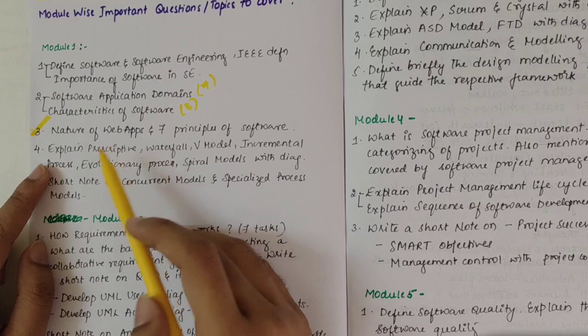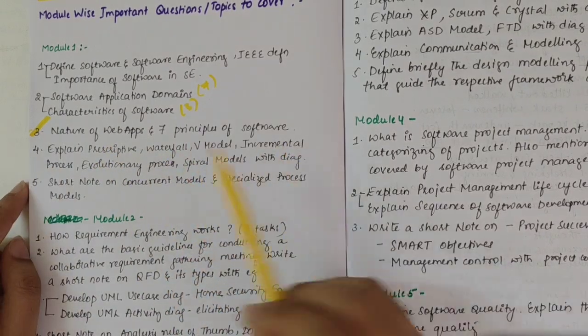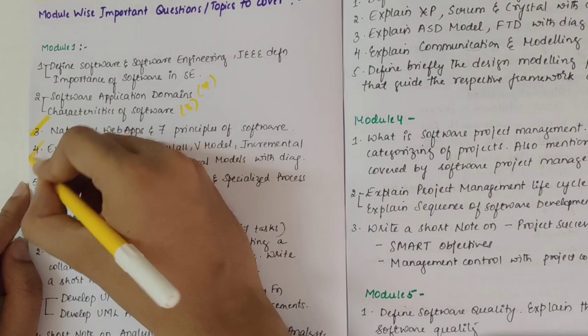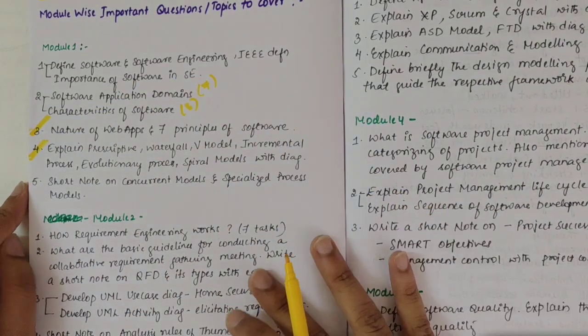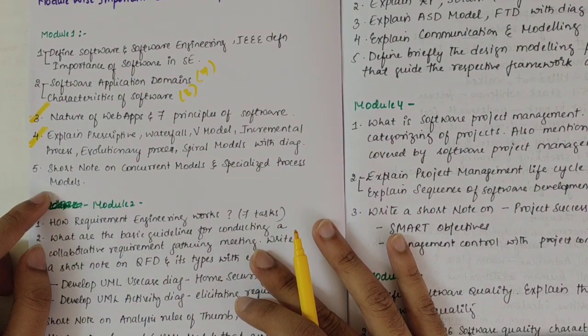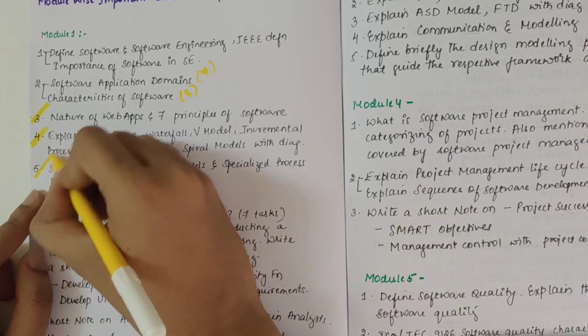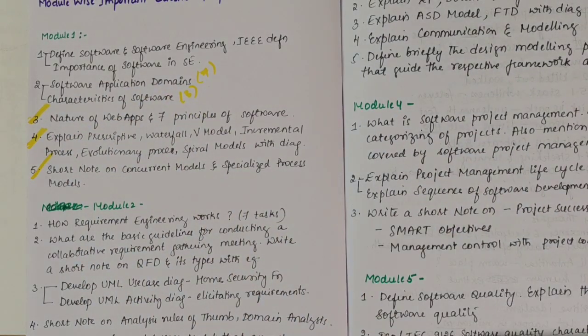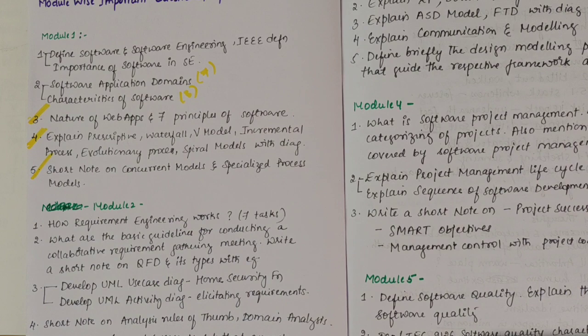Then we have explain prescriptive waterfall V model incremental process evolutionary process spiral with diagram. This is again important question. Then short note on concurrent models and specialized process models. This is again an important question. The ones which have marked are must questions to study from this module.